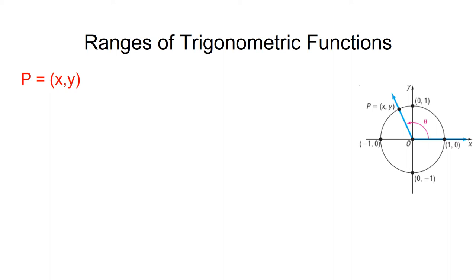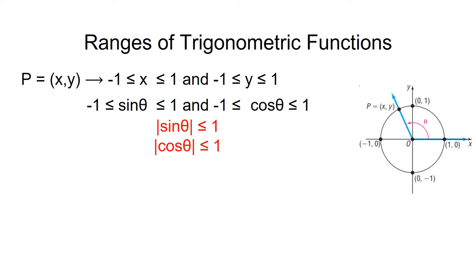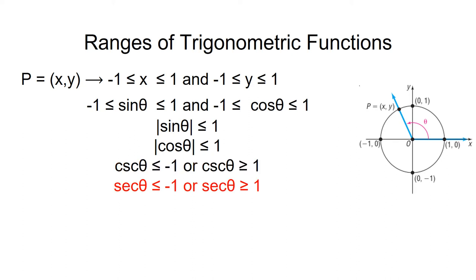Now let's look at the ranges of the six trigonometric functions. We begin with a point P on the unit circle at (x, y). We know that the values of both x and y fall between minus 1 and 1. Since y is equal to sine theta on the unit circle, sine theta must also fall between minus 1 and 1. The same is true for cosine theta. Another way to express this is to say that the absolute value of sine theta must be less than or equal to 1, and that the absolute value of cosine theta must also be less than or equal to 1. These basic restrictions lead to the discovery that cosecant theta is constrained to be either less than or equal to minus 1 or greater than or equal to 1.